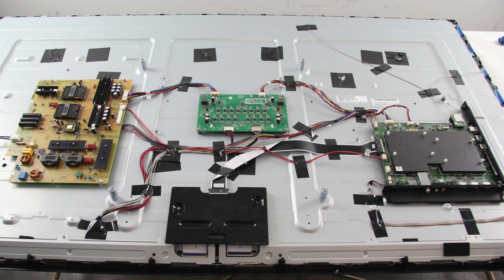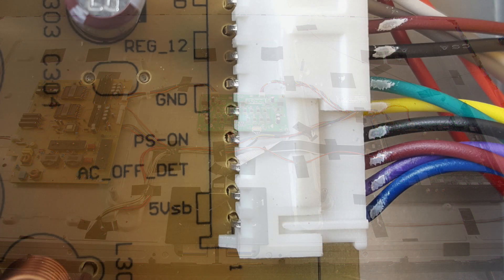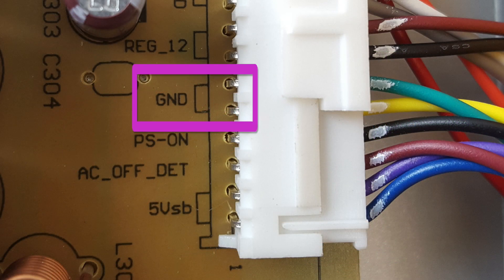If there is no metal chassis and the boards are mounted to plastic, then you will need to use the ground points on the boards.